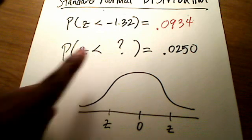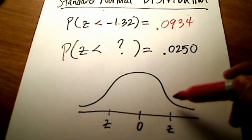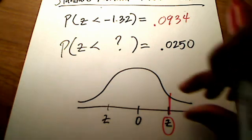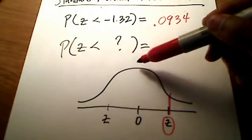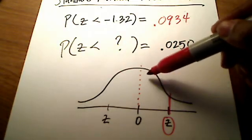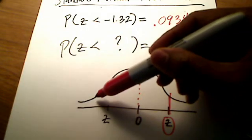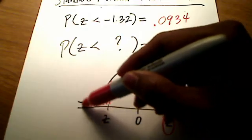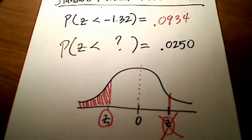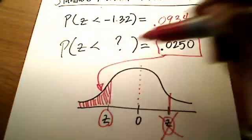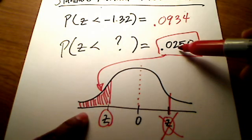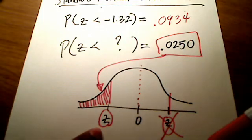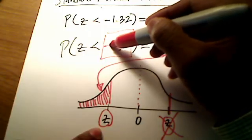It's shaded to the left because that's a less than symbol. If I shade to the left of a positive z-number — one that's to the right of 0 — that's a lot of area, more than half, because the curve is symmetrical with half on each side of 0. Well, .0250 is less than half, so I must be looking for a z-score that is negative, not a positive z-score. It's going to be a negative something — that I know for sure.